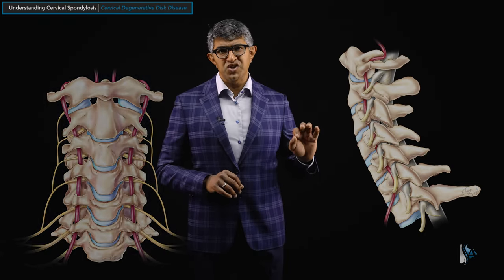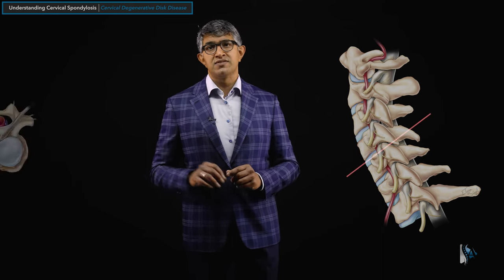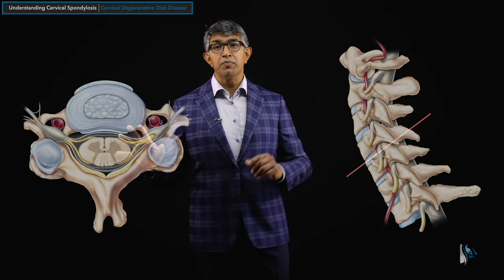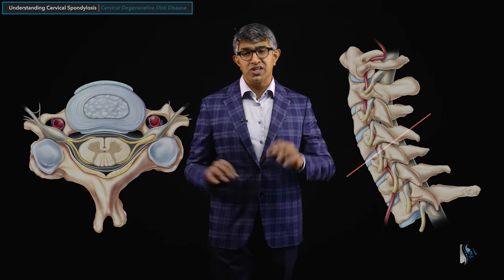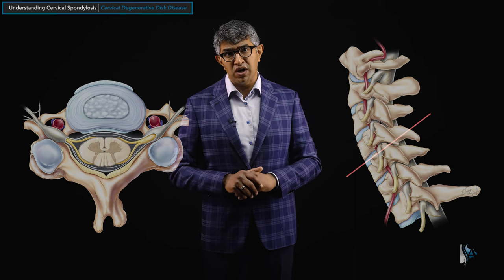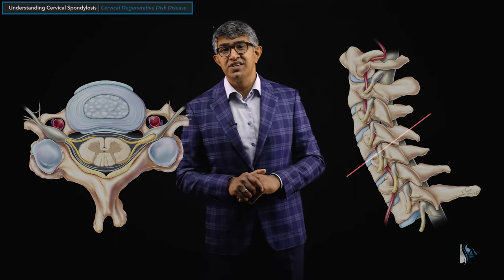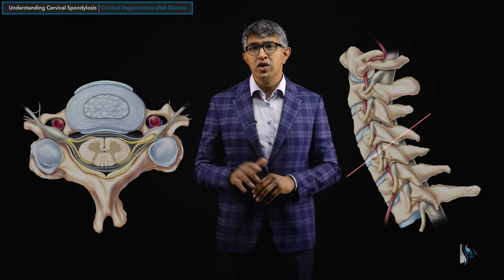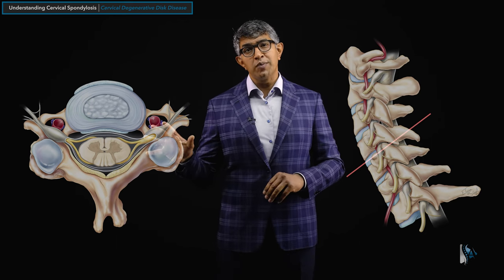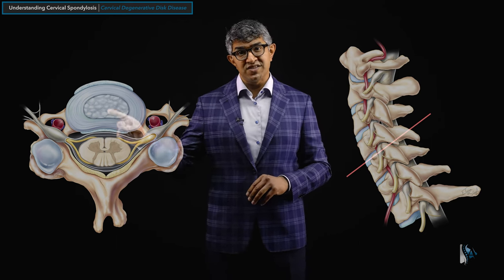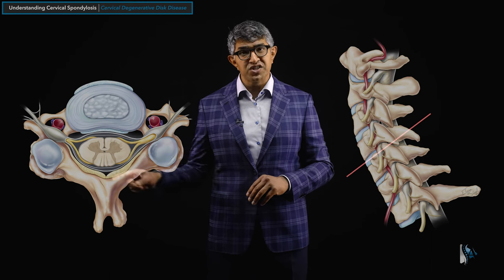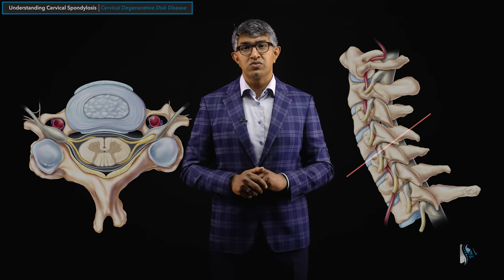If we take a slice through one of those pictures and look at an axial projection — as we discussed in the previous section — this really helps us look at not only the disc itself, but its relationship to the structures around it.